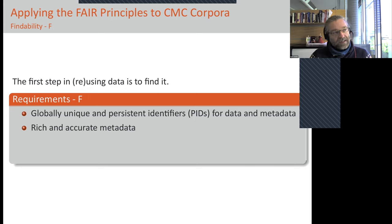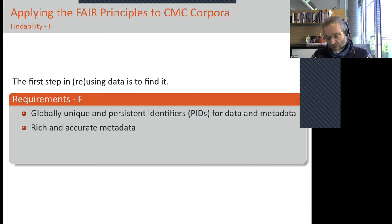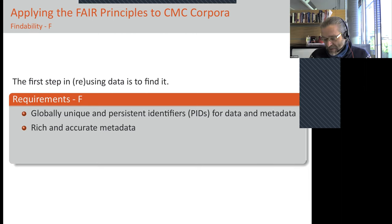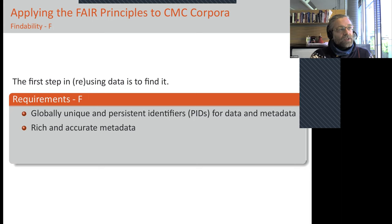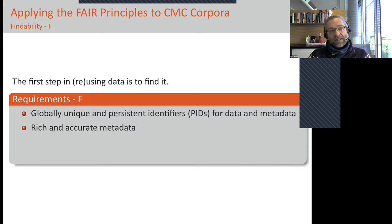Data is usually accompanied by data about the data, which we call metadata. One of the most important metadata items is probably the name of your corpus, and then the license — so the metadata basically indicates under what status you can use the data. Other metadata includes what language the data represents and many other domain-dependent things.